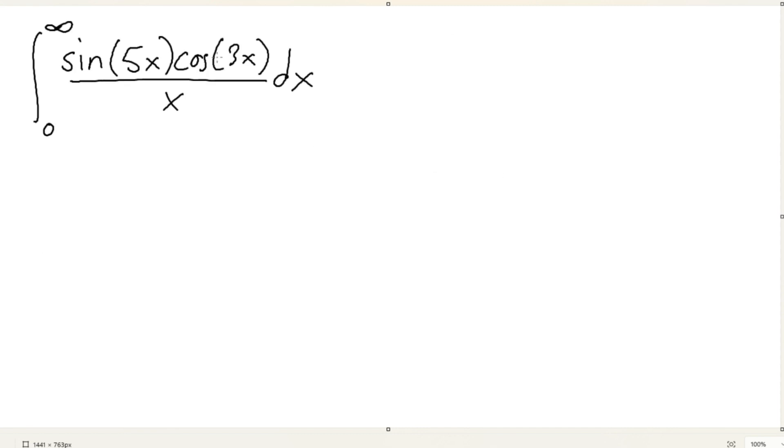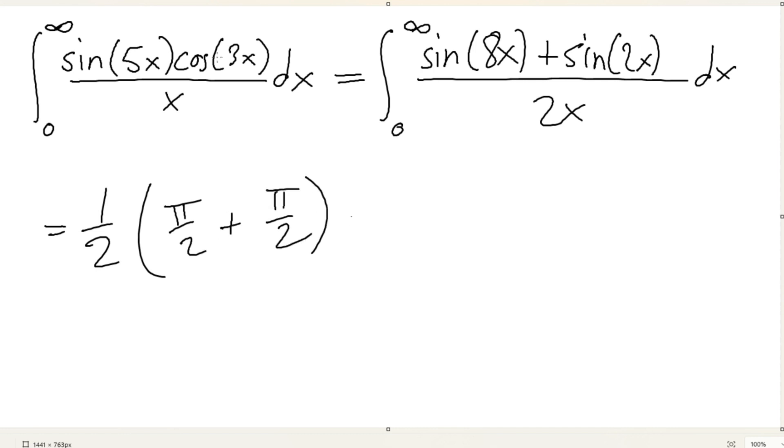This looks nasty. Someone would tell you, just use some Feynman technique or something. No, let's do something easier. Let's not get too crazy. So, this is just a trig identity. If you know your trig identity, I'm just going to dive right in. This is sine 6x cosine 9x over x. This is sine 2x all over 2x.